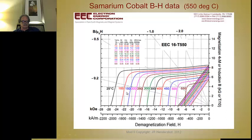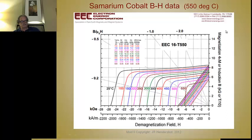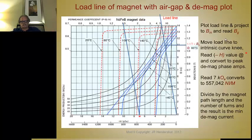Here's an example of very high temperature samarium cobalt. At 25°C it starts at about 0.85 tesla flux density, but at 550°C it drops down to about 0.56 tesla — a significant drop, but 550°C is very hot. This is for aerospace applications and is made by only one company as far as I know.